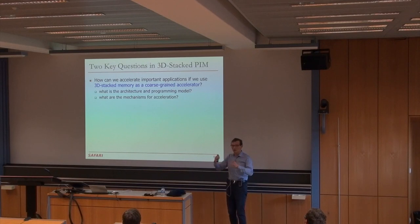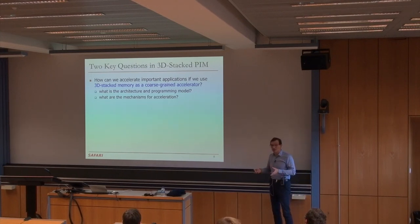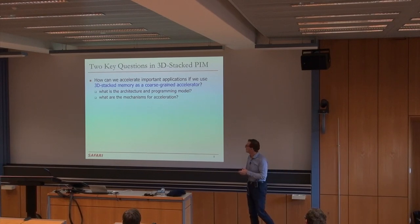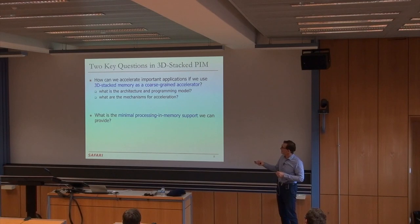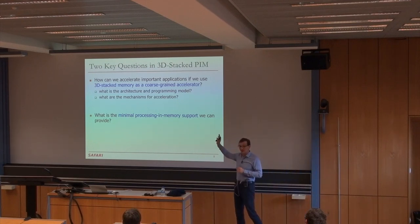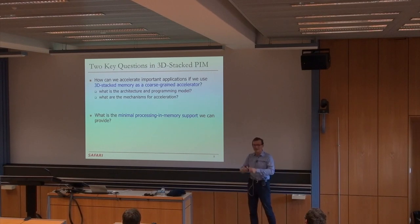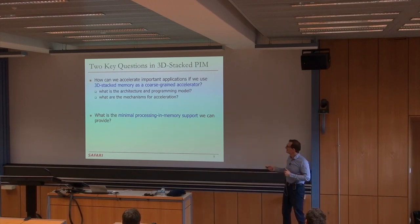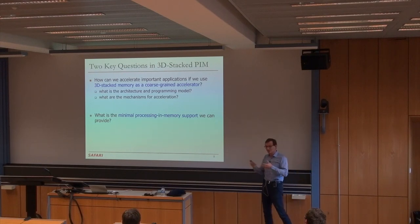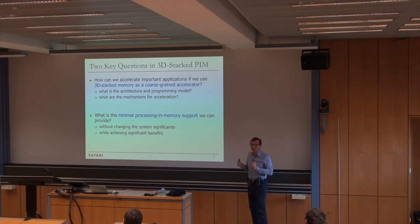We're going to look at mechanisms for acceleration at different levels of change. First, graph processing — we'll design a system meant for graph processing but actually more general purpose. Then the minimal approach, because the maximal may not be affordable by many people. It may be affordable by those who really care about a particular application like machine learning, and they lead the field and enable the technology for others, but that takes time. So it's good to look at what is the minimal support needed in a new technology for easier adoption. Minimal means not changing the system significantly, keeping the existing programming model, while hopefully achieving significant benefits.